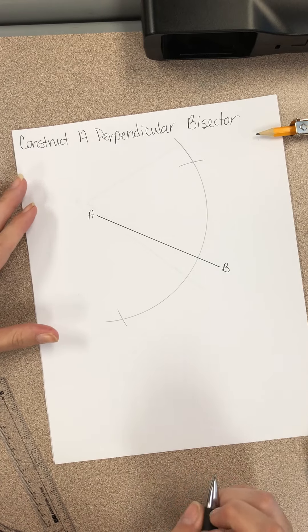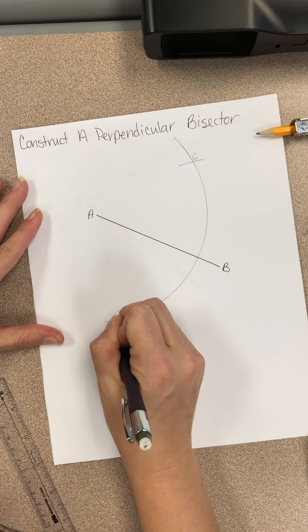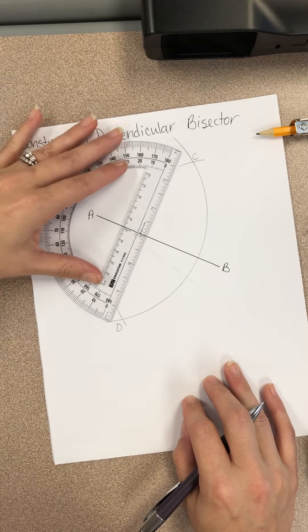So we're supposed to label these intersections C and D. And then we connect them using a straight edge.